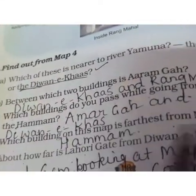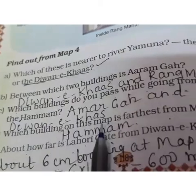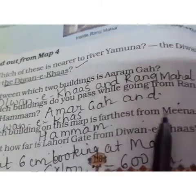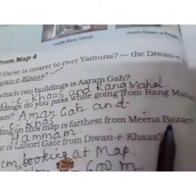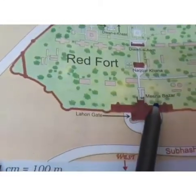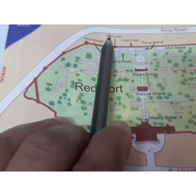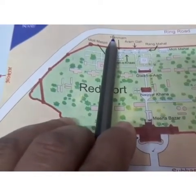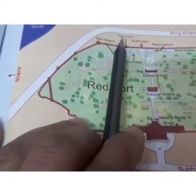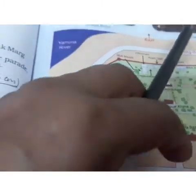So you pass Aram Kaha and Diwan-e-Khas going from Rang Mahal to Hamama. Next question: which building on the map is the farthest from Mina Bazaar? Mina Bazaar is on this side, so the building farthest from it — the last building — is Hamama, which is the farthest from Mina Bazaar.